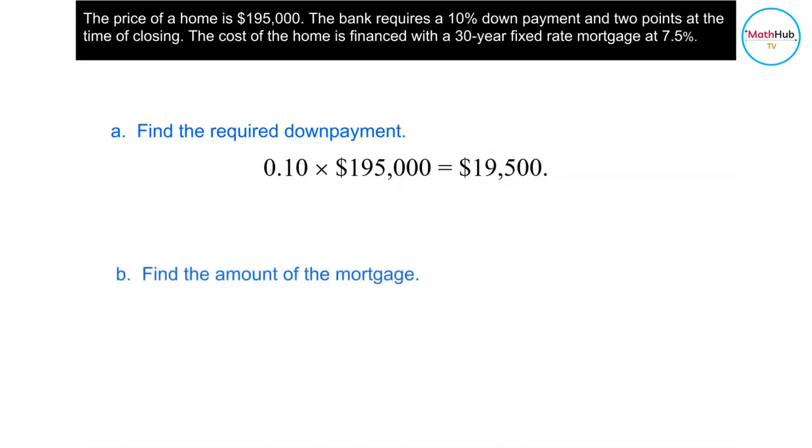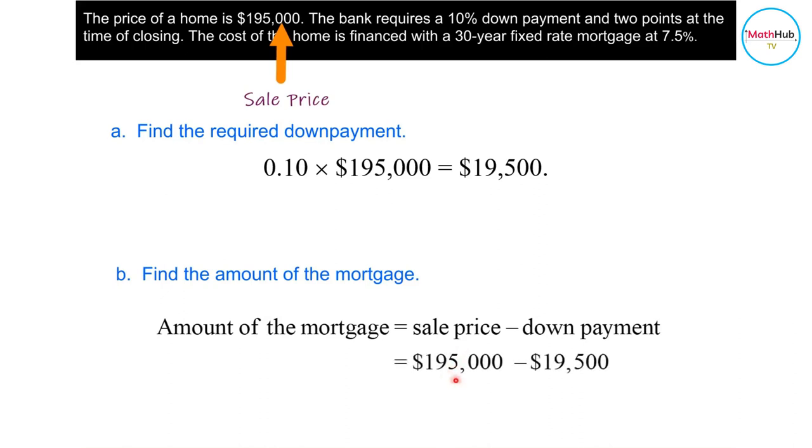The amount of the mortgage is the difference between the price of the home and the down payment. The sale price is $195,000 minus the down payment of $19,500. This is the initial amount you pay to the seller. The difference is $175,500, which is the amount you would have to borrow from the bank.